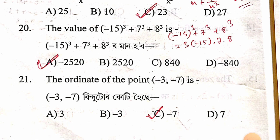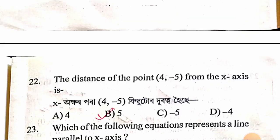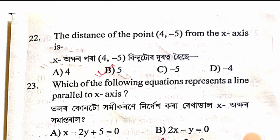The ordinate of the point (−3, −7): the ordinate (y-coordinate) is −7. The answer is option C, −7.